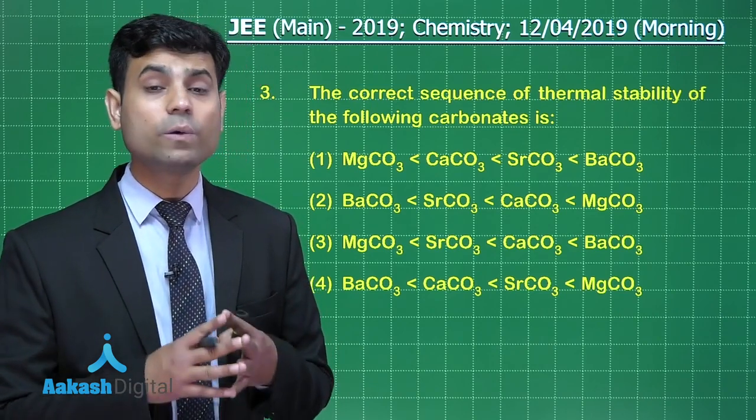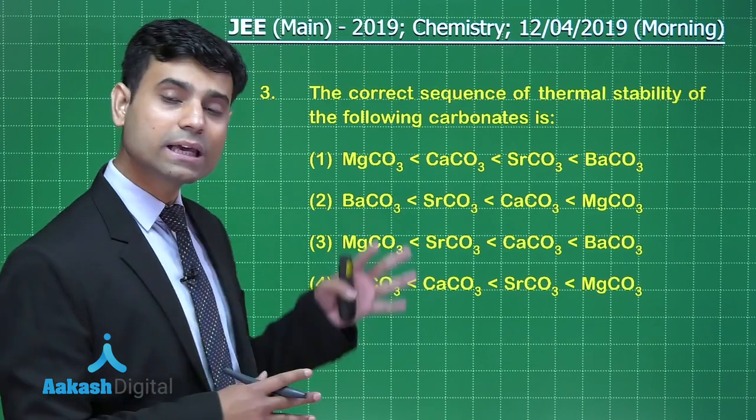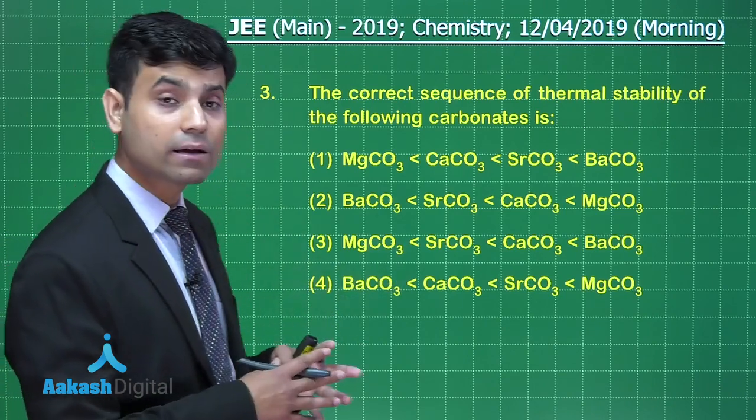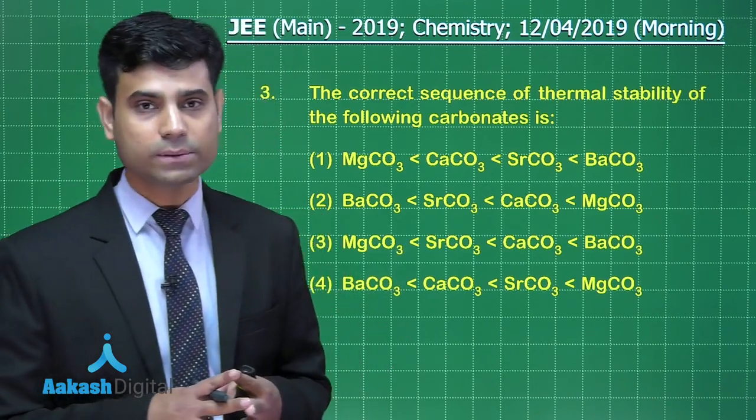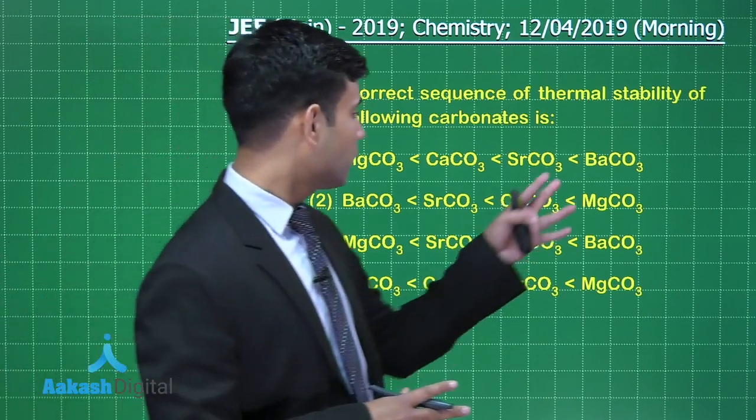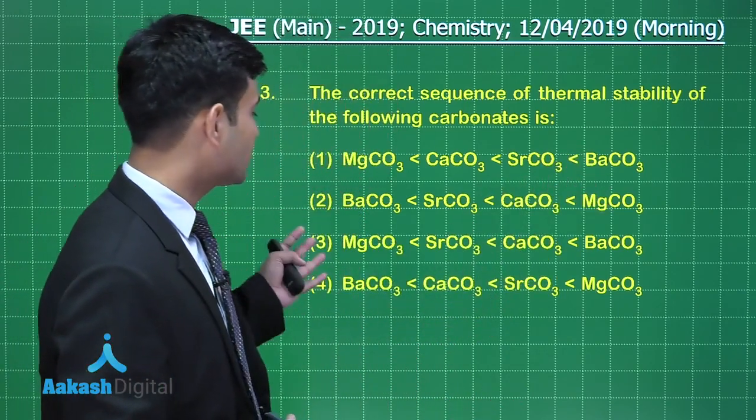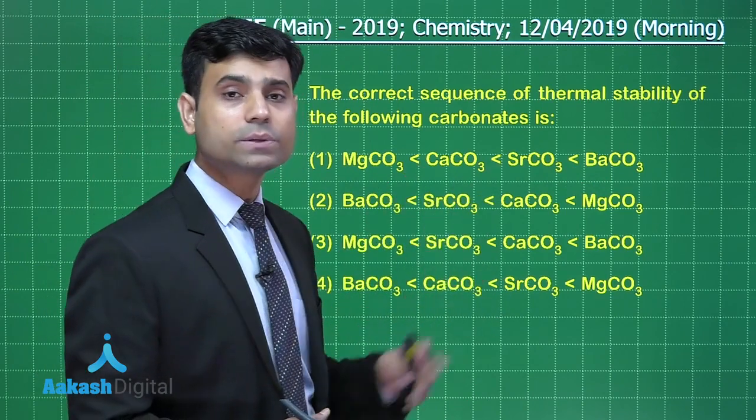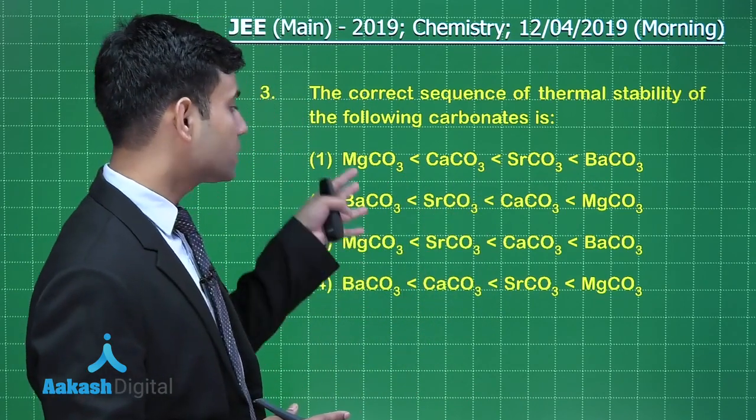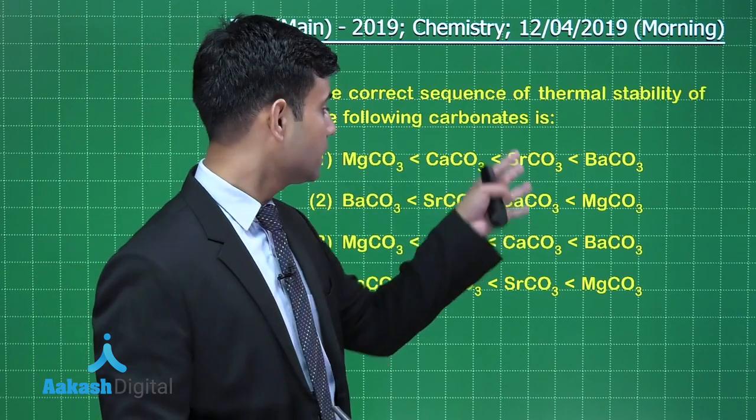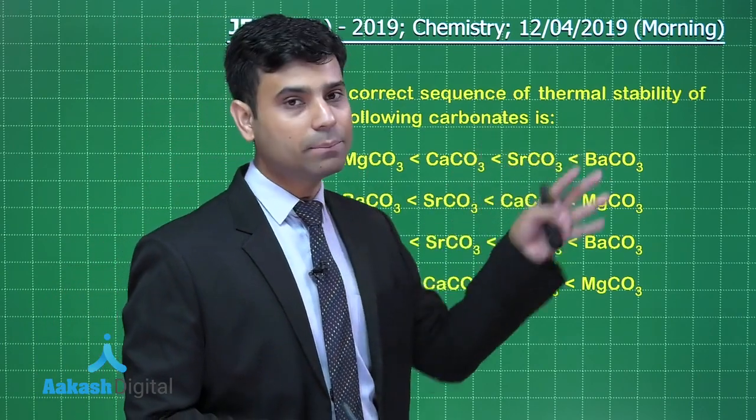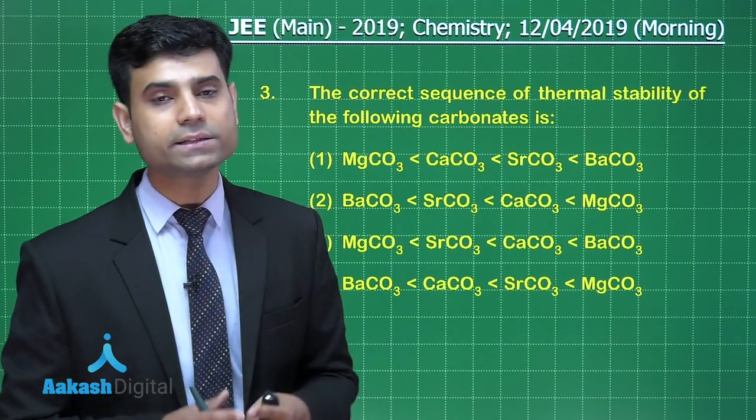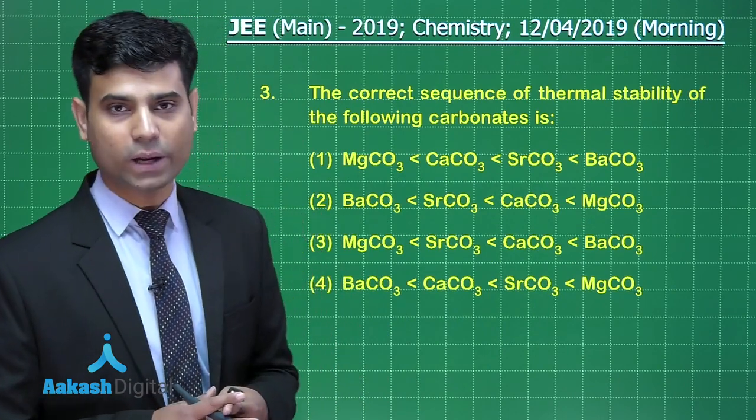As we move down the group, thermal stability of alkaline earth metal carbonates will increase. So in the given options let's check where barium carbonate has the maximum thermal stability. We have option 1 and option 3, but this order is reversed in option 3. The correct order should be magnesium carbonate, calcium carbonate, strontium carbonate, and barium carbonate. Hence the correct answer for this question will be option 1.